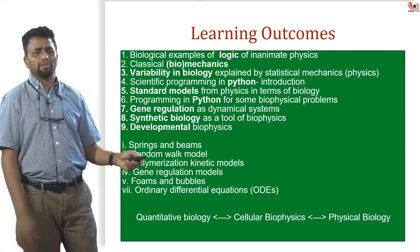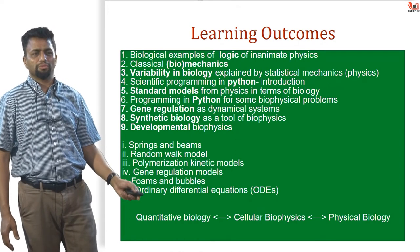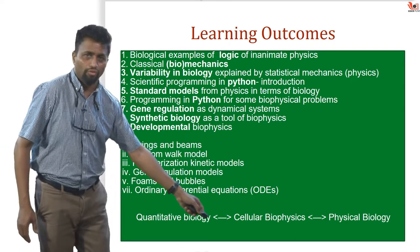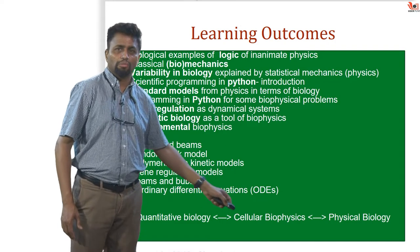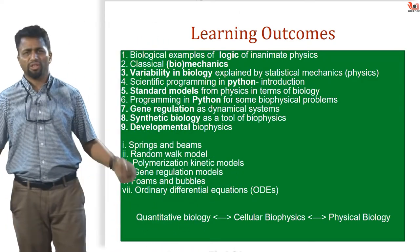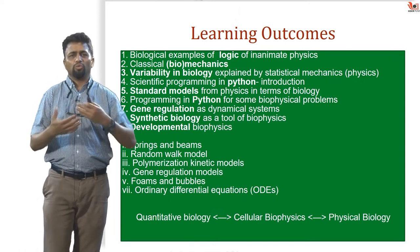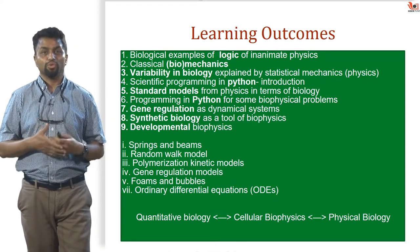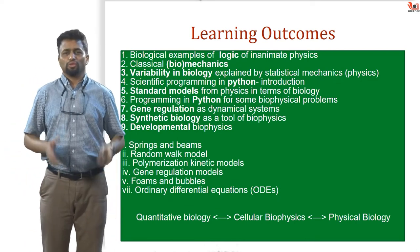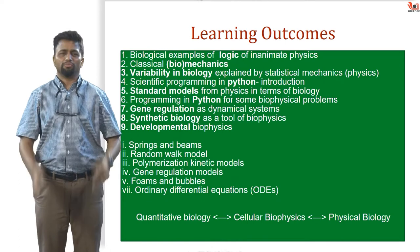The standard models we are going to talk about are springs and beams, the random walk model, polymerization kinetic models, gene regulation models, foams and bubbles, and ODE models. What you will hopefully see is that we go from cellular biophysics in the direction of more biology — quantitative biology — and more physics — physical biology. This interplay will help you appreciate how crossing interdisciplinary boundaries gives you a deeper insight into biology, which is the aim of this course: to give you a tool of the mind to approach biology from a quantitative perspective.